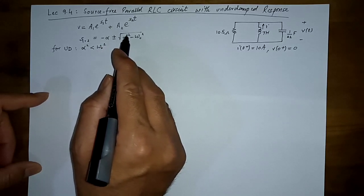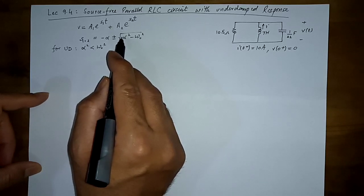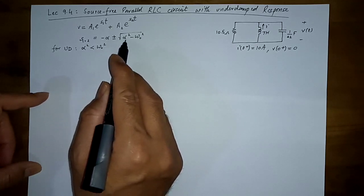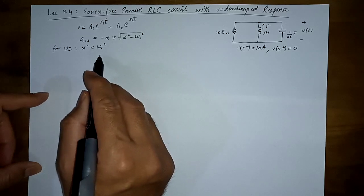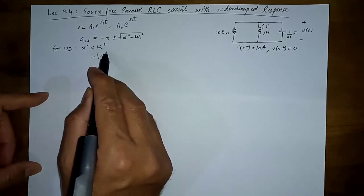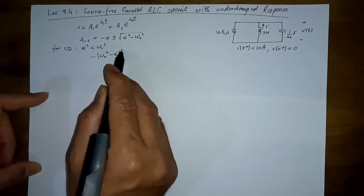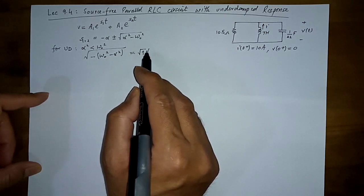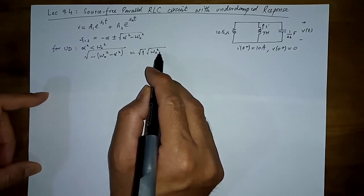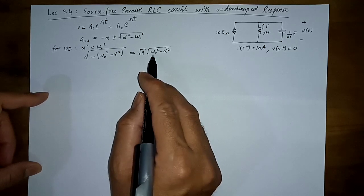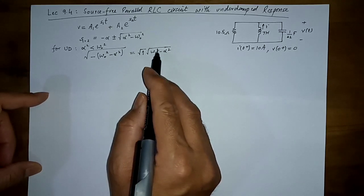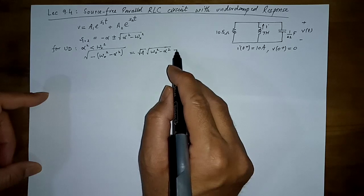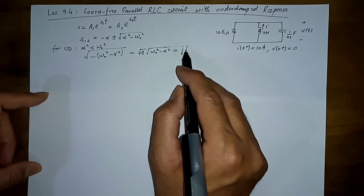For the under-damped case, alpha squared is less than omega-naught squared. In the radical sign we have a negative term, so the square root of a negative term is not real. We rewrite the term under the radical as minus of (omega-naught squared minus alpha squared). Since alpha squared is smaller than omega-naught squared, this inner quantity is positive, and taking the square root introduces j — the imaginary unit (in engineering we use j instead of i).